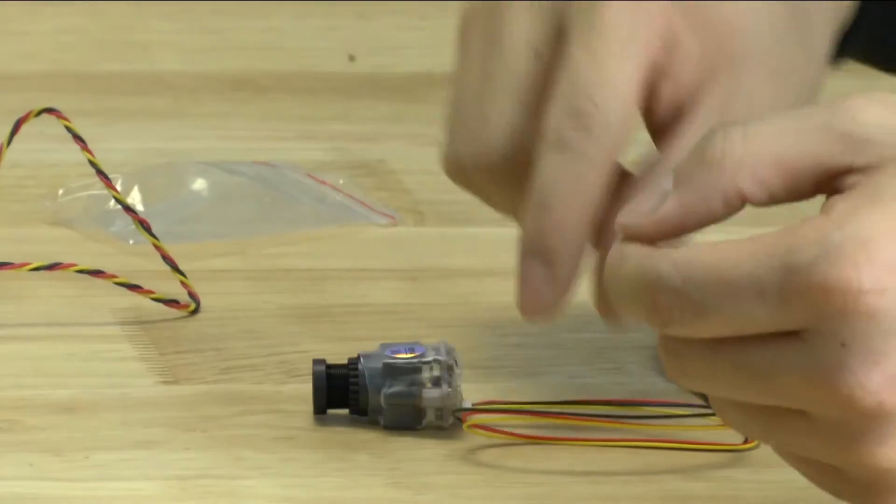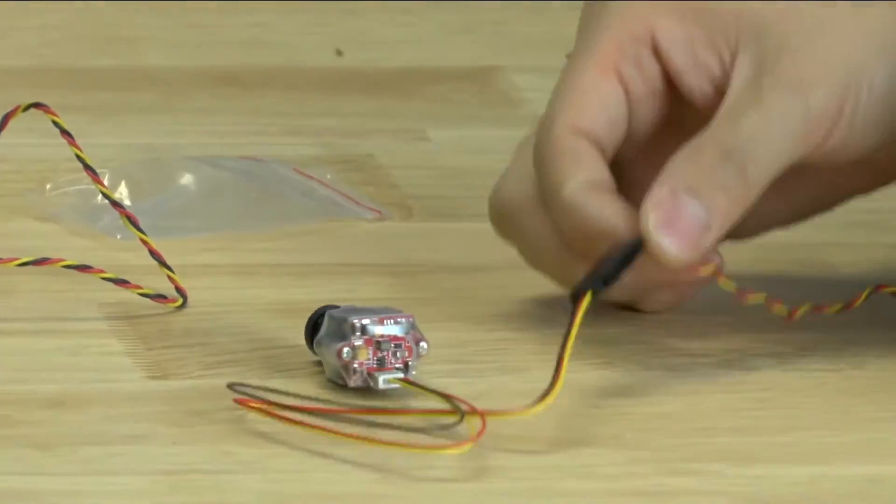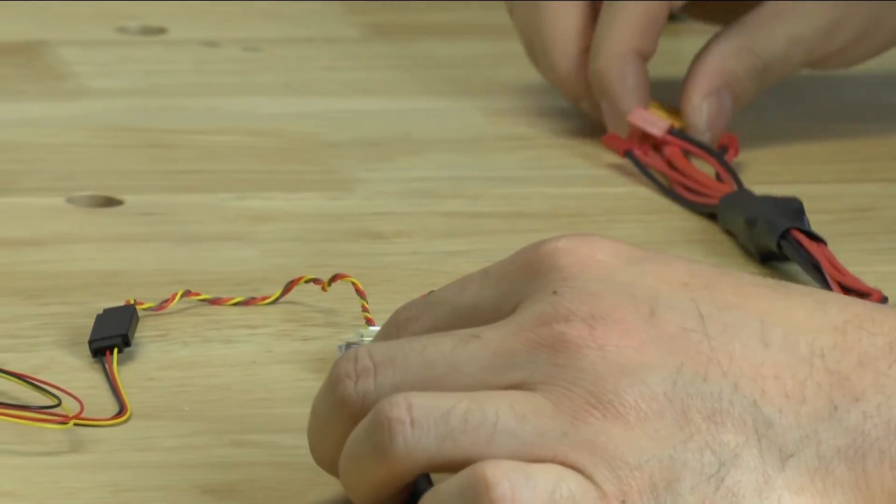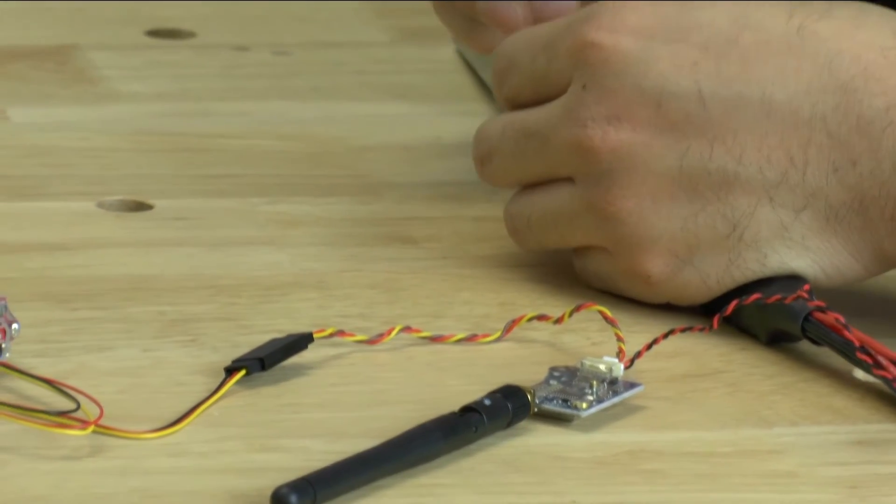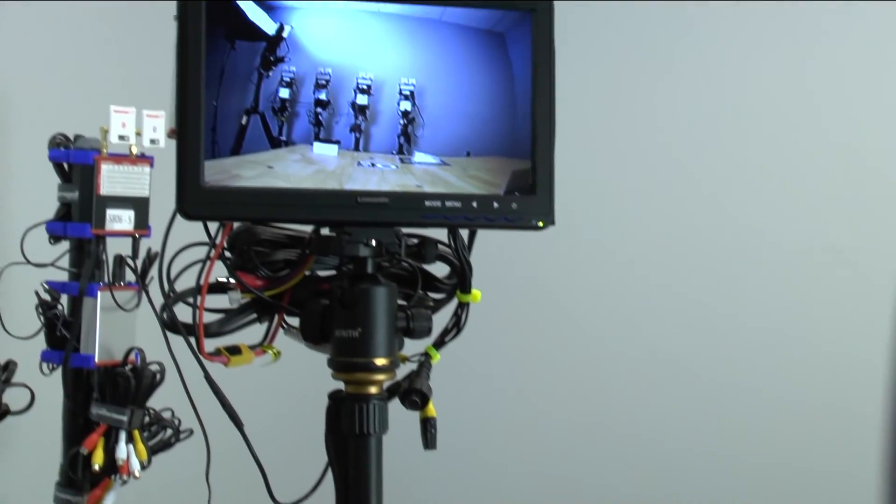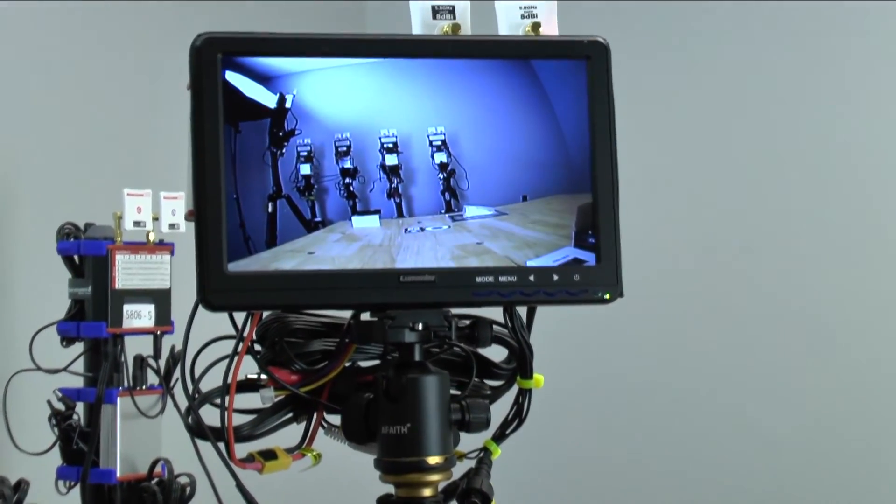So we went ahead and plugged up the wire to our video transmitter again. And we're going to go ahead and plug it up. And then you can see the picture quality, which I've already looked at. And it's very similar to the bigger brother, which is the HS1177, the non-M version.